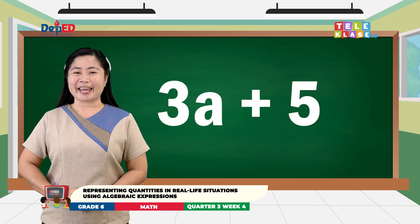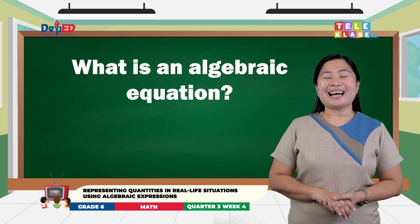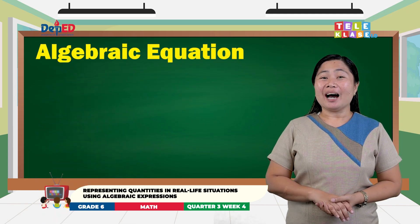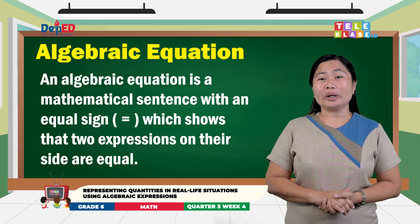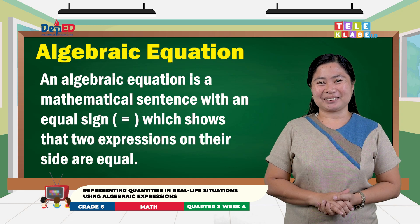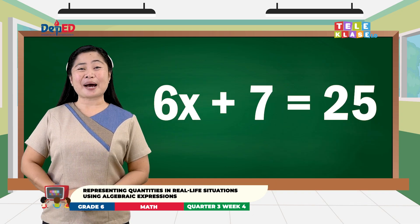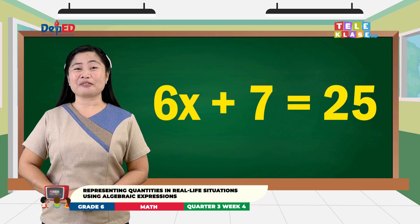For example, 3a plus 5 is an algebraic expression. What is an algebraic equation? An algebraic equation is a mathematical sentence with an equal sign which shows that two expressions on either side are equal. For example, 6x plus 7 is equal to 25 is an example of an equation.